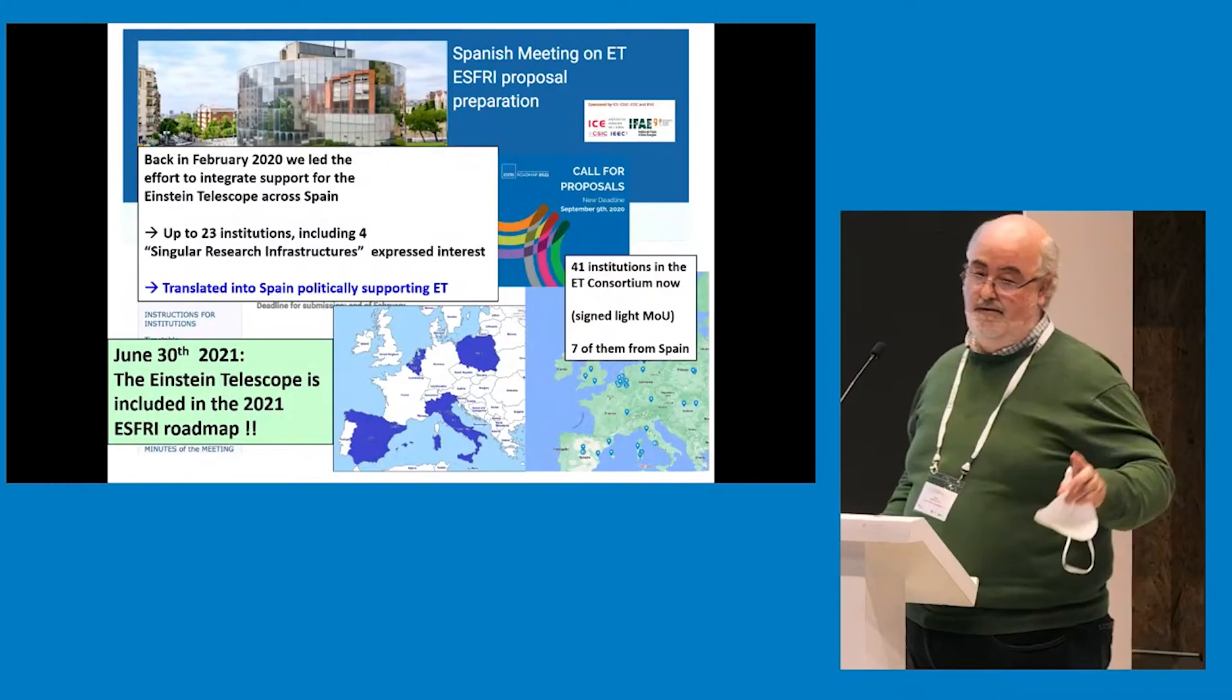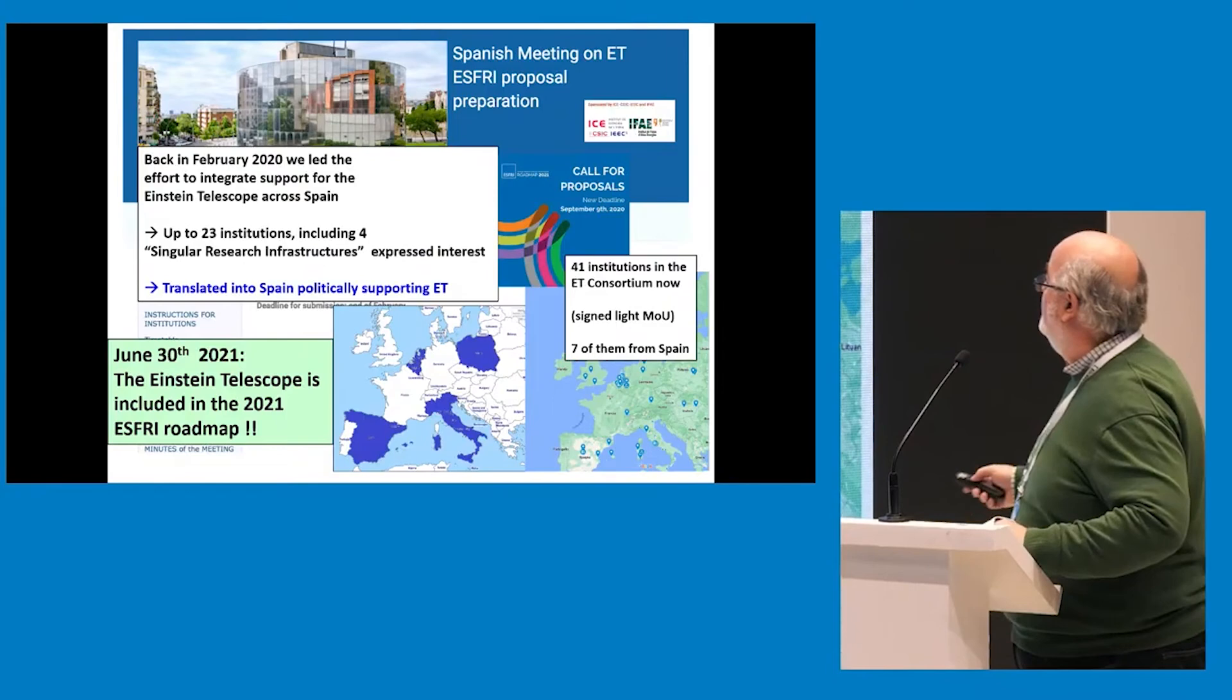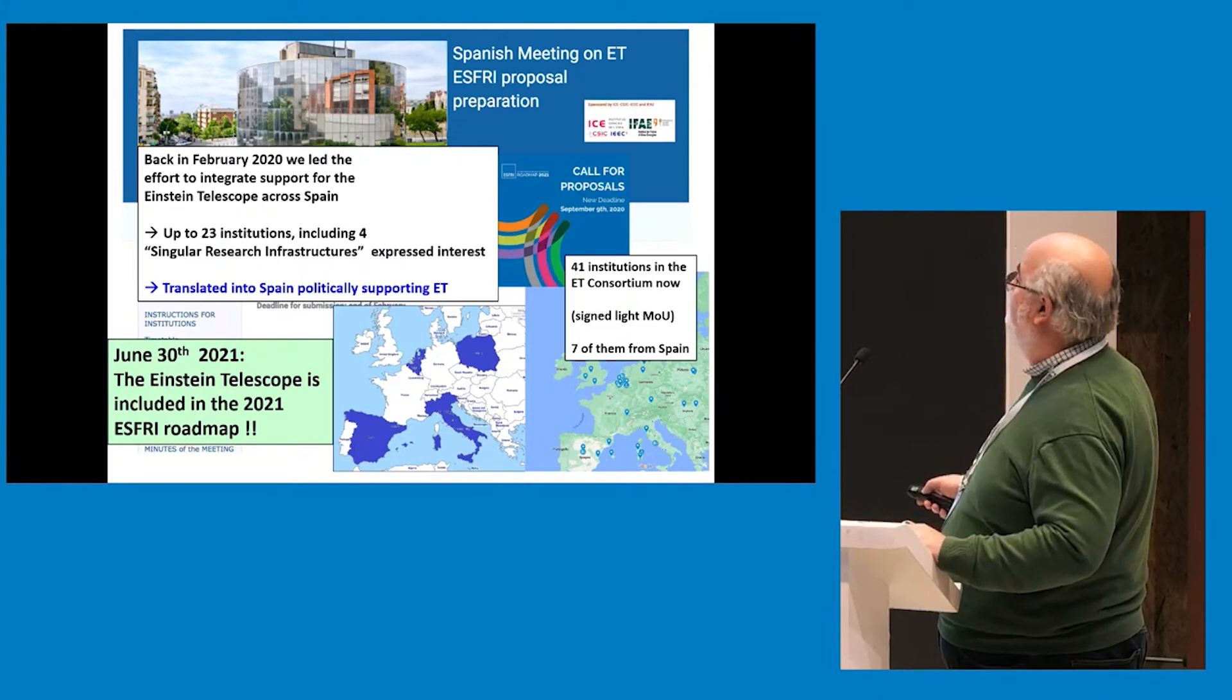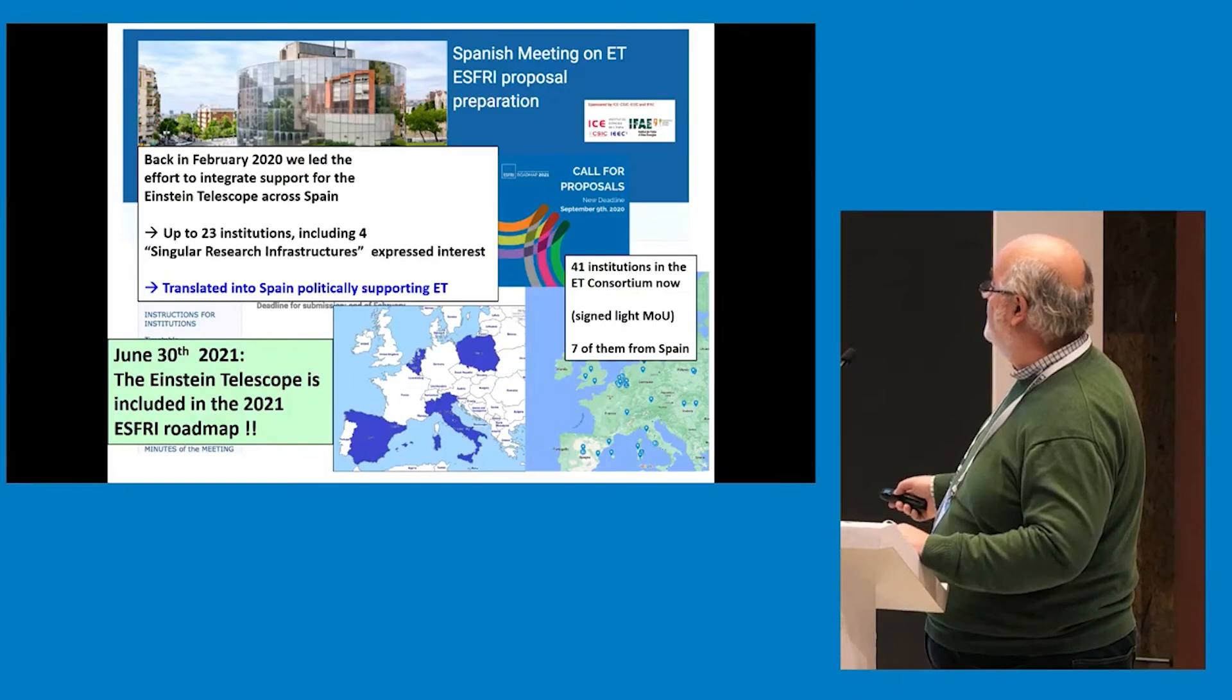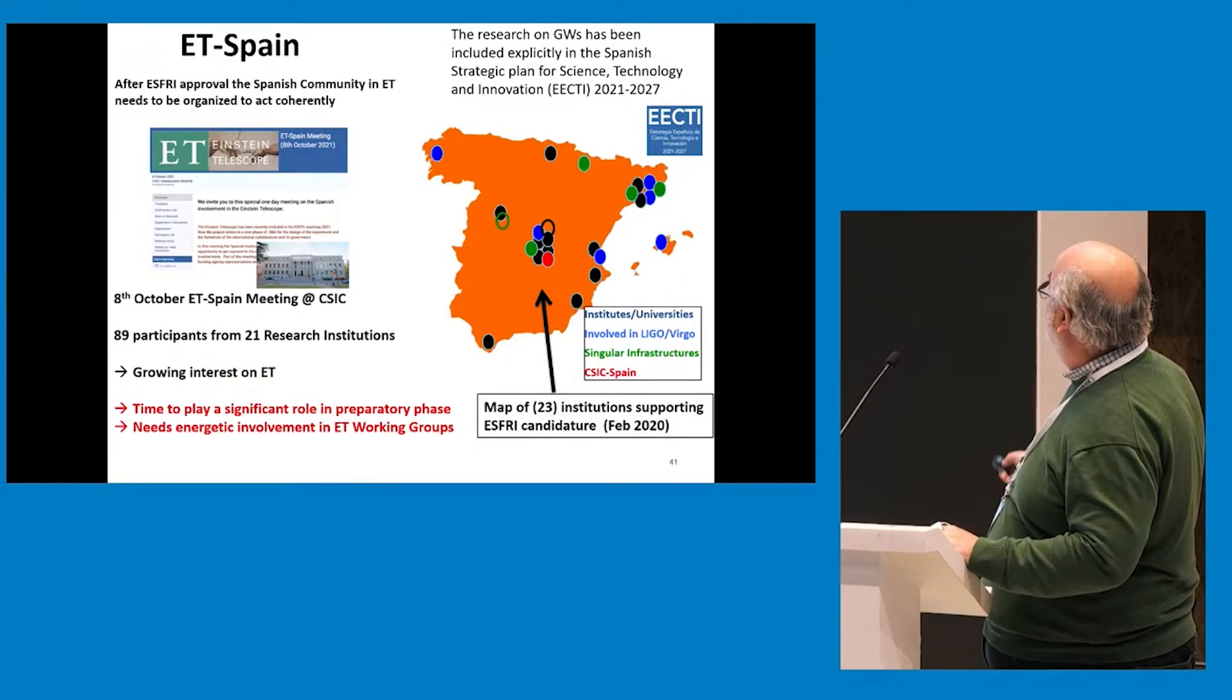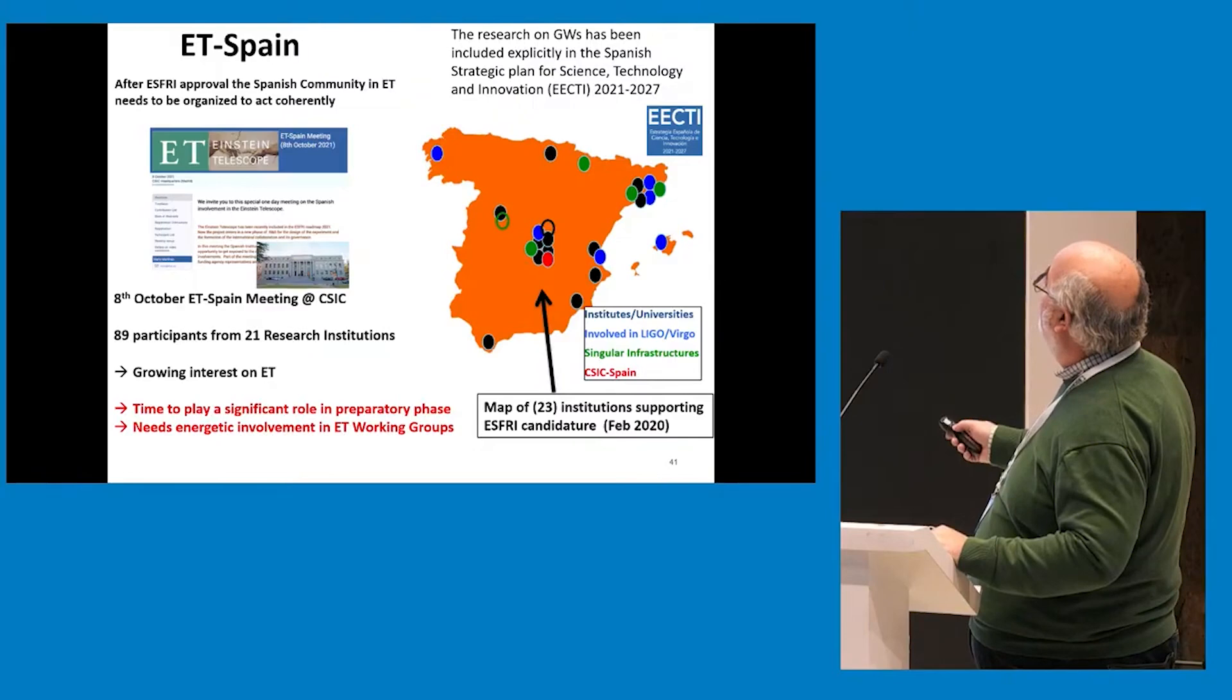So, what happened in Spain? Back in 2020, we organized a meeting to support the candidature of ET as a free infrastructure. This was a meeting that was a great success, was up to 23 institutions coming into this question, even for what we call single infrastructures in Spain. This translated in Spain being one of the five countries that actually sent to Europe a letter politically supporting ET. That was translated not only because of Spain, but translated into ET being included into the ESFRI roadmap.